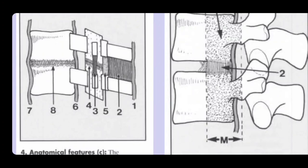The anterior column is formed by the anterior longitudinal ligament, anterior part of the vertebral body, and anterior part of the intervertebral disc. The posterior column is formed by spinous processes, ligaments connecting spinous processes, transverse processes, and intertransverse ligaments. The middle column is formed by the posterior part of the vertebral bodies, posterior part of the intervertebral disc, and the posterior longitudinal ligament.